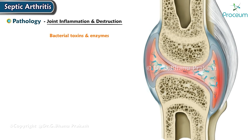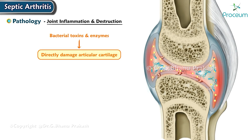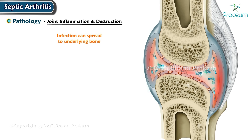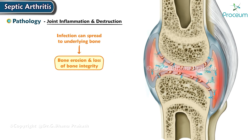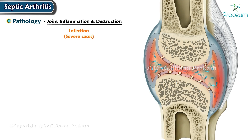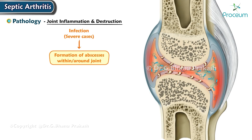Bacterial toxins and enzymes can directly damage articular cartilage, leading to its destruction. The infection can spread to the underlying bone, causing bone erosion and loss of bone integrity. In severe cases, the infection can result in the formation of abscesses within or around the joint, further contributing to tissue damage and destruction.